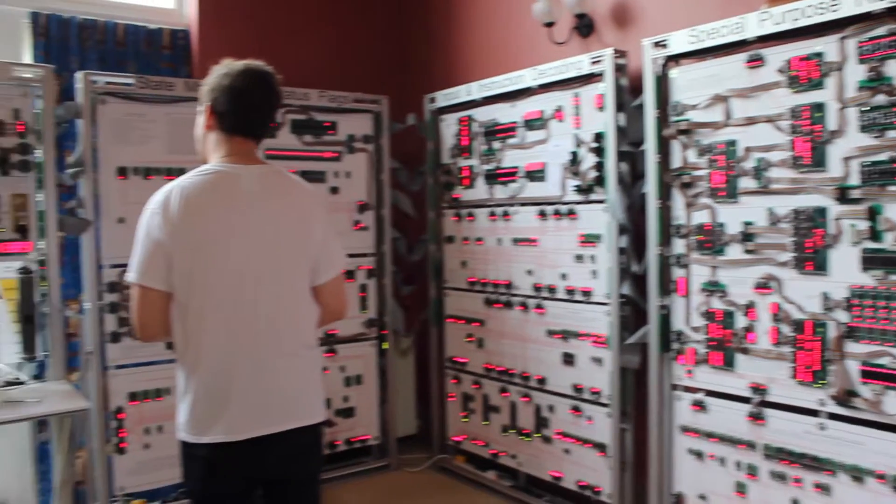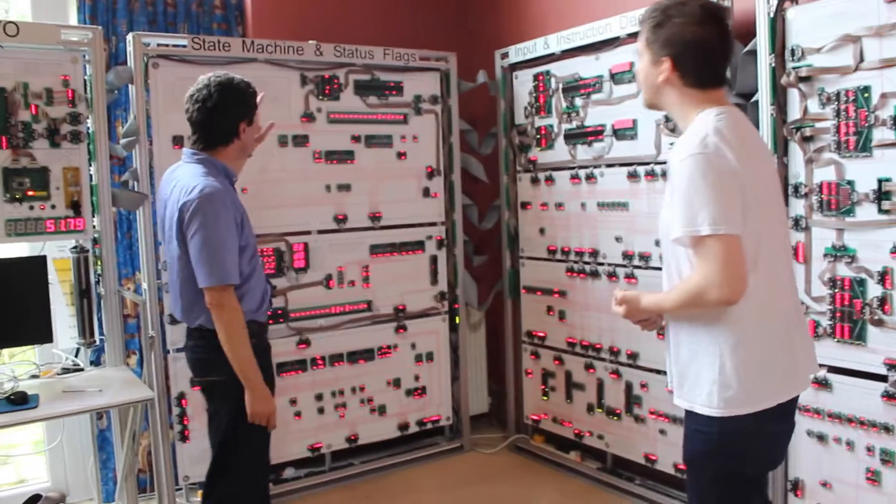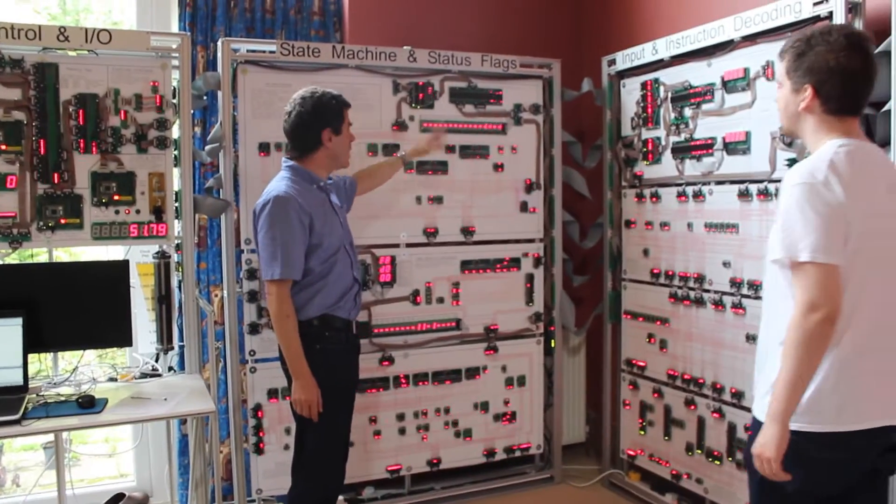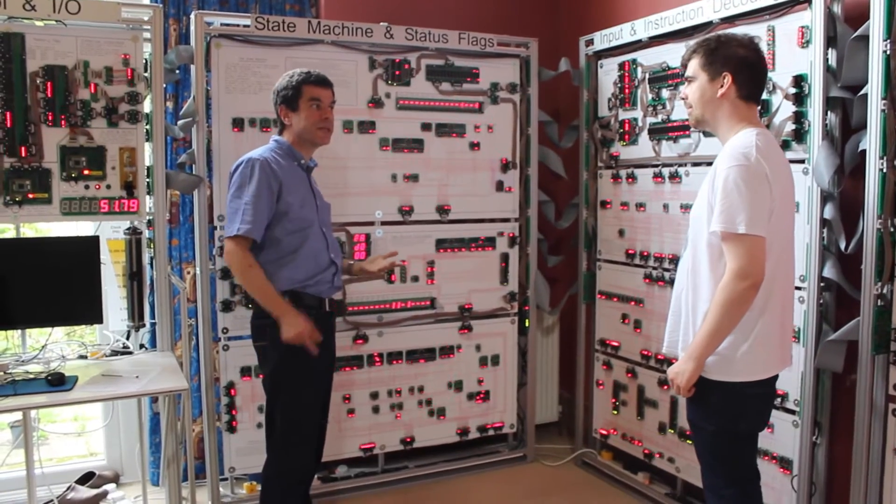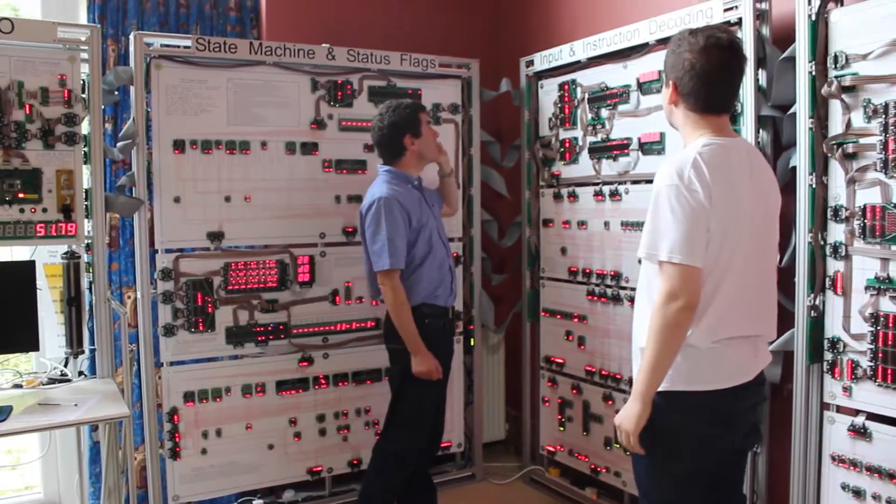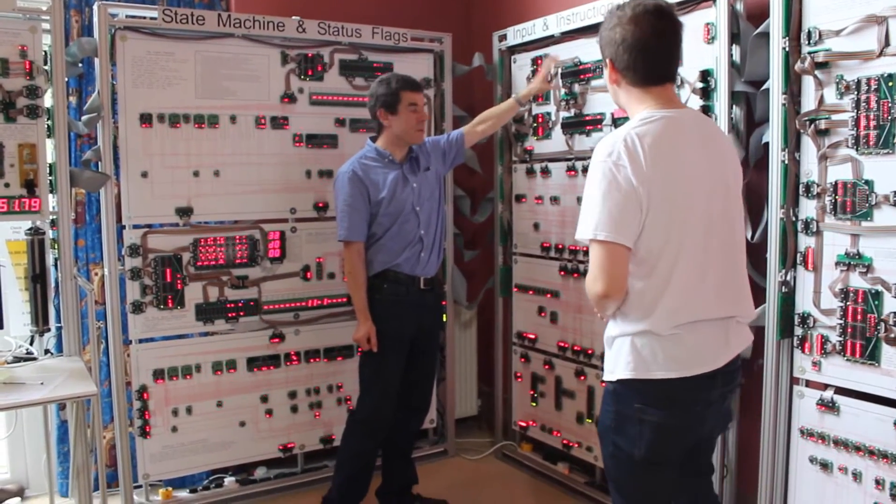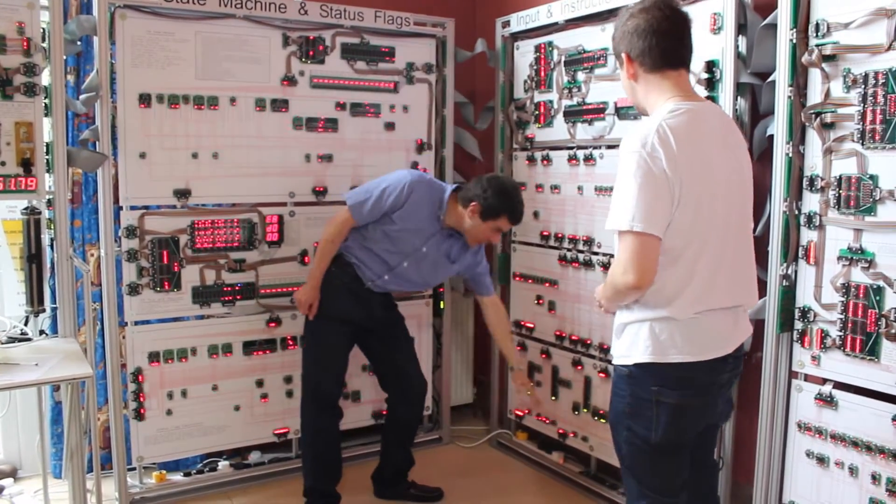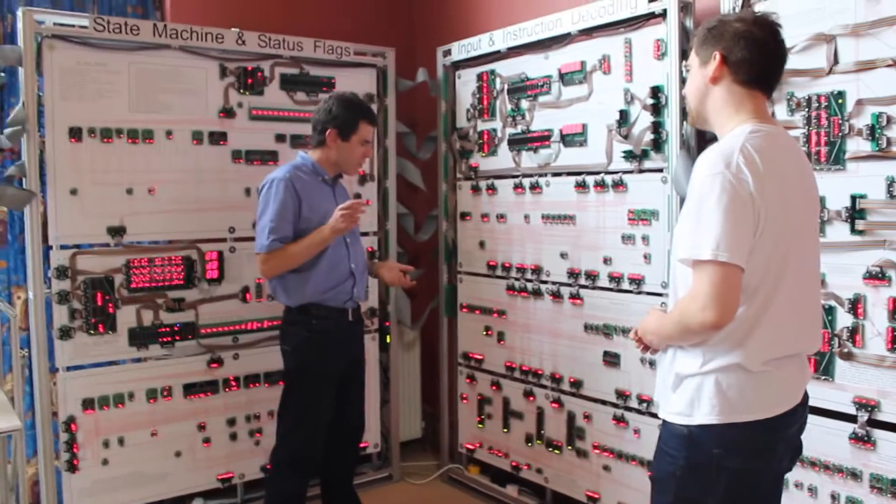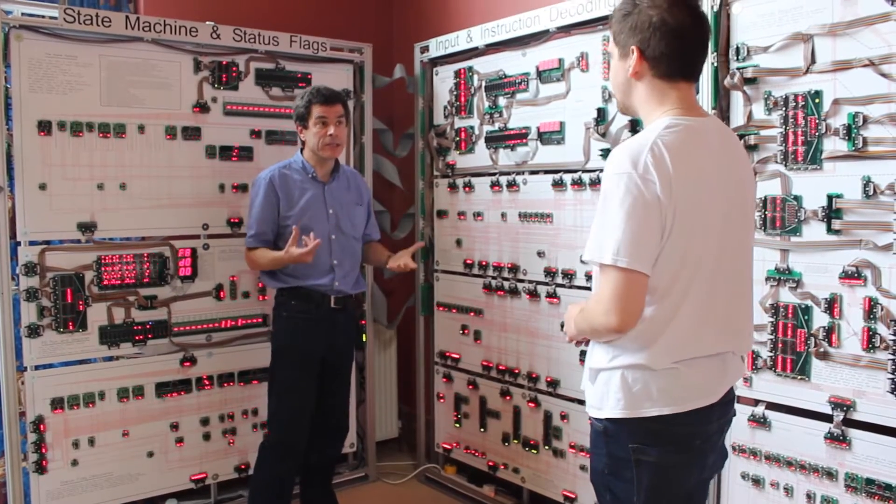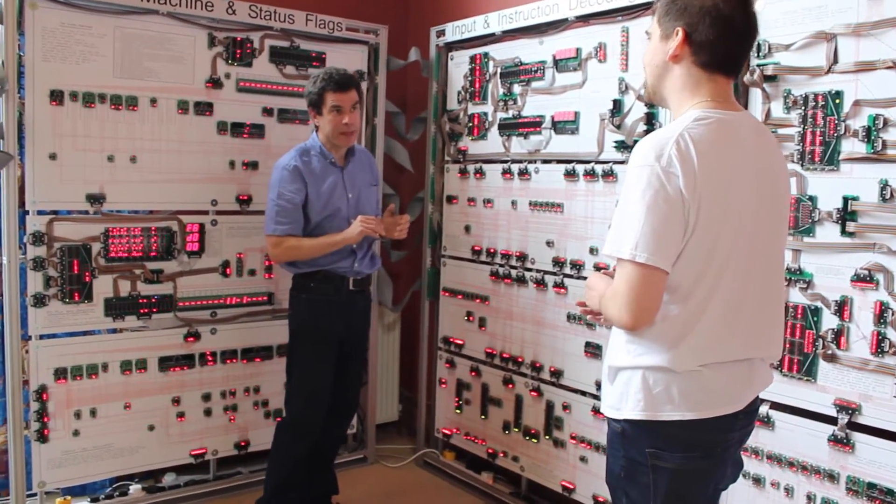Now we're into the processor itself. Up here we have the state machine which controls the sequencing of things - some instructions take several cycles to run. This is the instruction decoder, so the instructions land here from the memory. This section works out what that instruction was and combines it with information like the current state and the status to help the rest of the machine work out what's supposed to be happening.